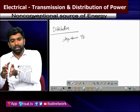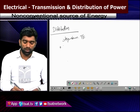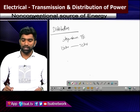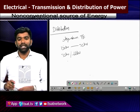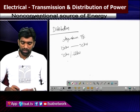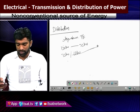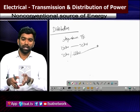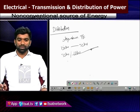Distribution has two parts: primary distribution and secondary distribution. Primary distribution converts 132 kV to 33 kV. Secondary distribution converts 33 kV to 11 kV. From 11 kV, depending on the utility, power can be given to different consumers: industries, factories, consumers, agriculture, and railways.